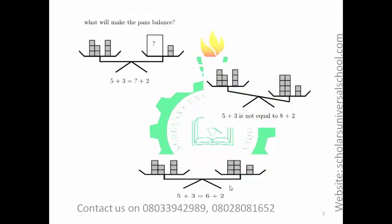Let's look at this example. We are asked to balance this pan. Here we have 5 ties plus 3 ties on one side. One side is missing, but on the other side we have another 2 ties. If you have 5 plus 3, it gives you 8 — the total number of ties. That means the number we need to add to 2 to give us 8 is the number of ties that is missing.